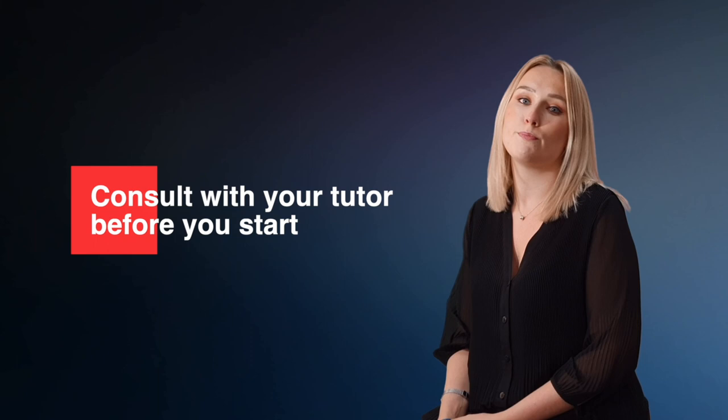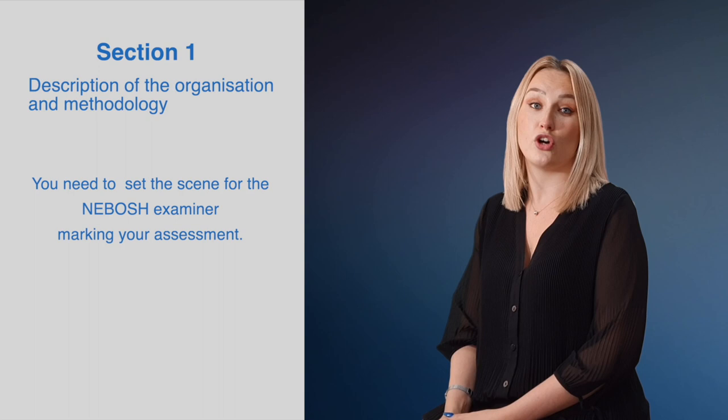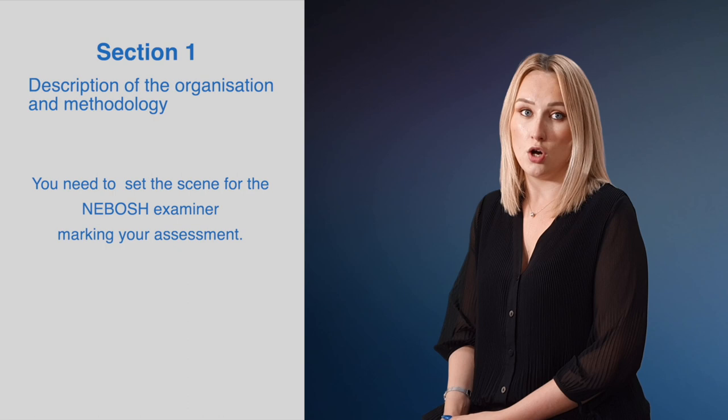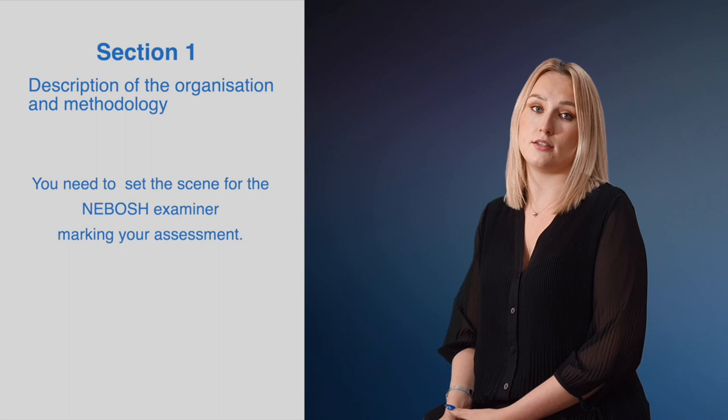Section 1: Description of the organisation and methodology. The first thing you are going to do is set the scene for the NEBOSH examiner marking your assessment. They will want to know the name of the organisation, site location, how many workers are employed by the organisation, what the organisation does, their products, services, general activities and shift patterns, the area on which the risk assessment is based upon, and any other information you think is relevant.